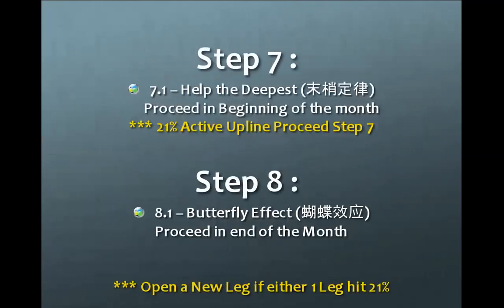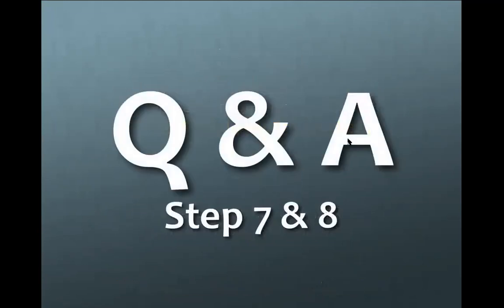Steps 7 and 8 are already mentioned in the Eight Golden Keys Basic Course — refer back to the basic class video or your upline to further understand them. Step 8 is about reaching 21% active applied to process Step 7 — you open a new leg once either one leg hits 21%. Without 21%, it's better to have four legs with a 4x4 structure, working together with 9044.